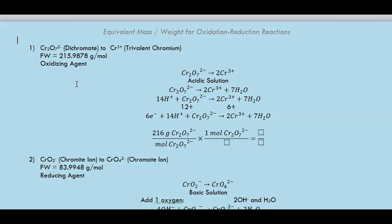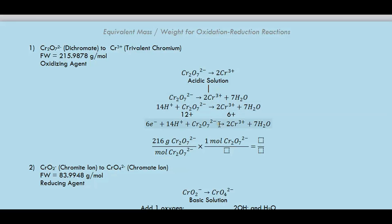What is the change in oxidation number? Dichromate changes to trivalent chromium. This happens in an acidic solution. The formula weight written here is for dichromate — two chromium atoms and seven oxygen atoms, or two moles of chromium and seven moles of oxygen.